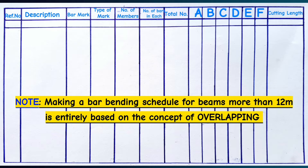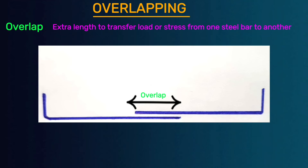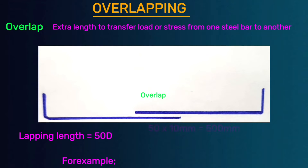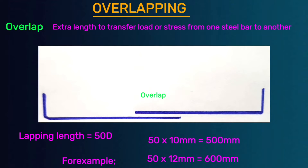Making a bar bending schedule for beams more than 12 meters is entirely based on the concept of overlapping. An overlap is simply the extra length on a steel bar that allows transfer of load from one steel bar to another. The lapping length can be calculated using the formula: overlap = 50D, where 50 is a constant and D is the diameter of the steel bar. For a 10mm bar, overlap = 500mm; for a 12mm bar, overlap = 600mm.